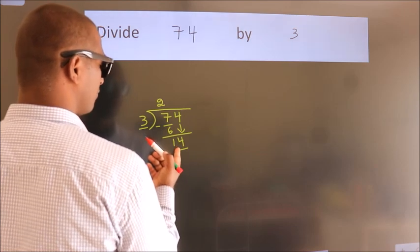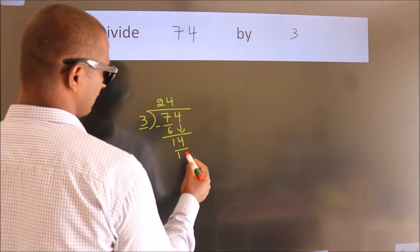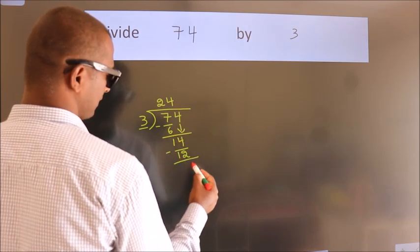A number close to 14 in 3 table is 3 twos 12. Now, we subtract. We get 2.